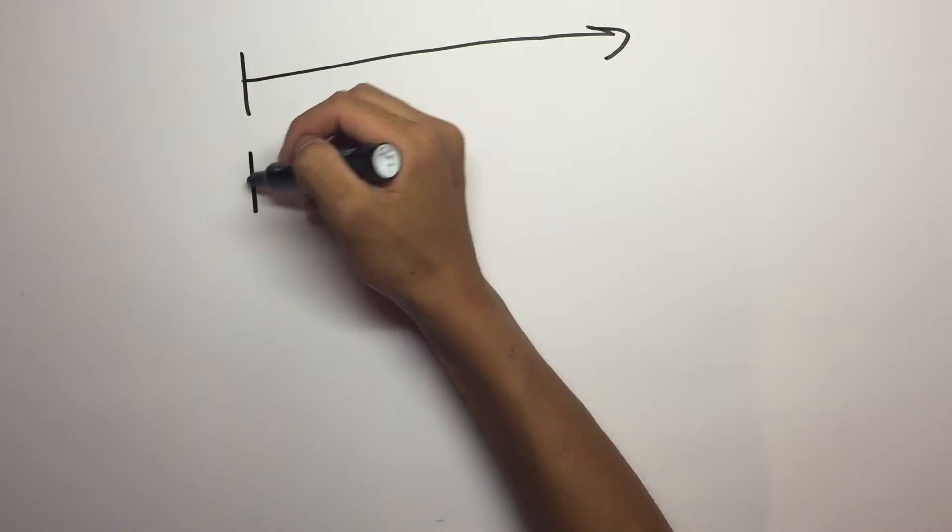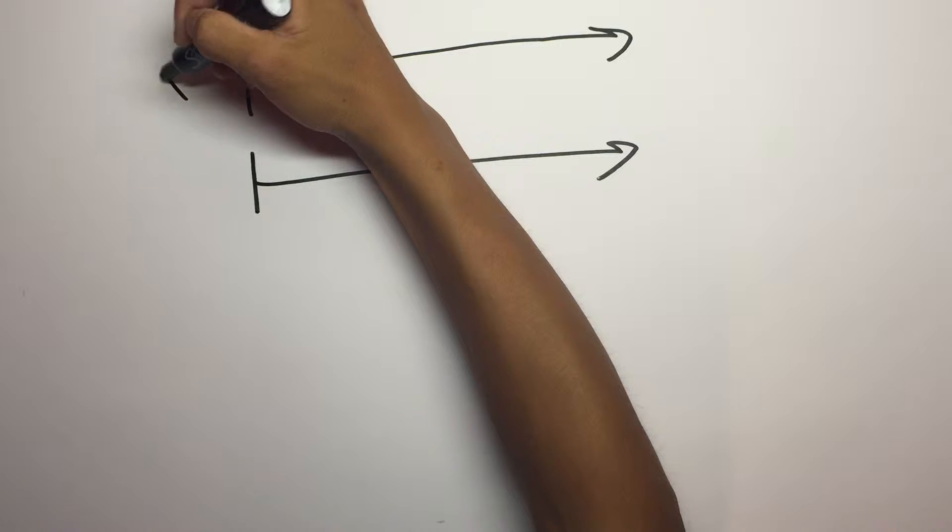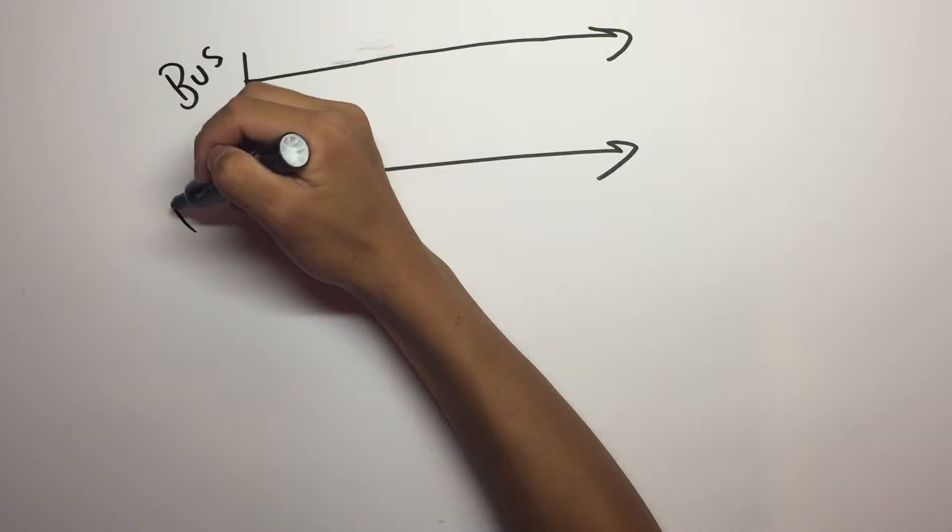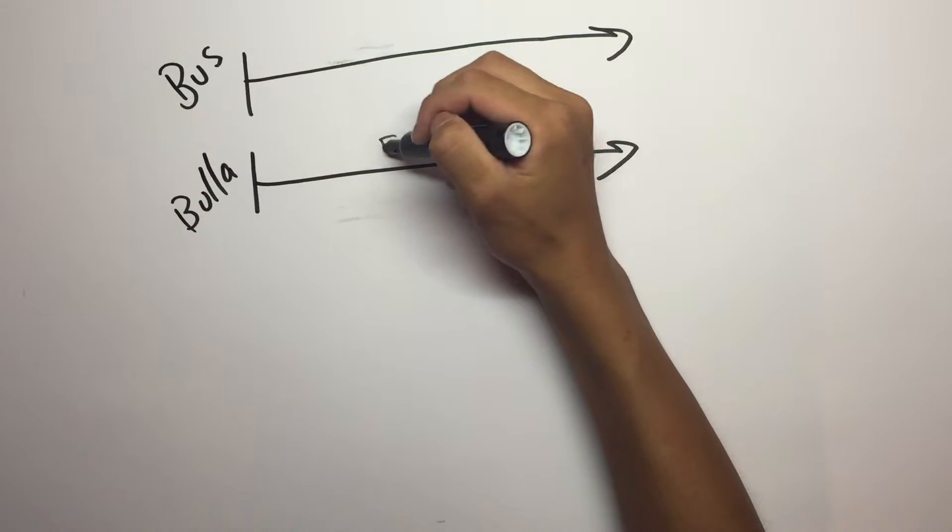So first, we're going to draw a picture to demonstrate the speed and how far it is for each person. The bus on top and Bula on the bottom.